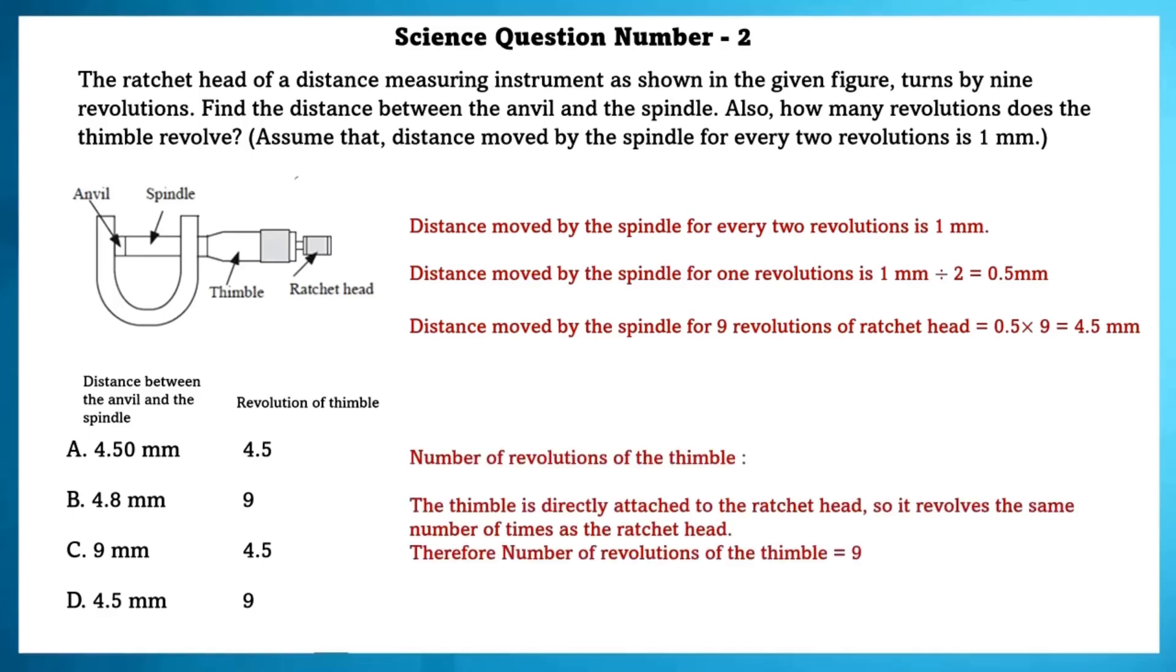Number of revolutions of the thimble: The thimble is directly attached to the ratchet head, so it revolves the same number of times as the ratchet head. Therefore, number of revolutions of the thimble is equal to 9.